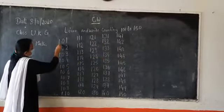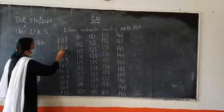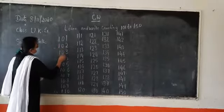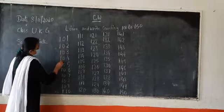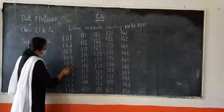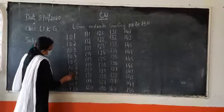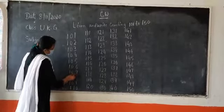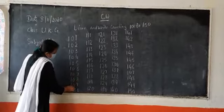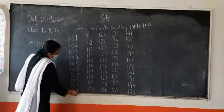Now start. 101, 101. 102, 102. 103. 104. 105, 105. 106, 106. 107, 107. 108, 108. 109, 109. 110, 110.